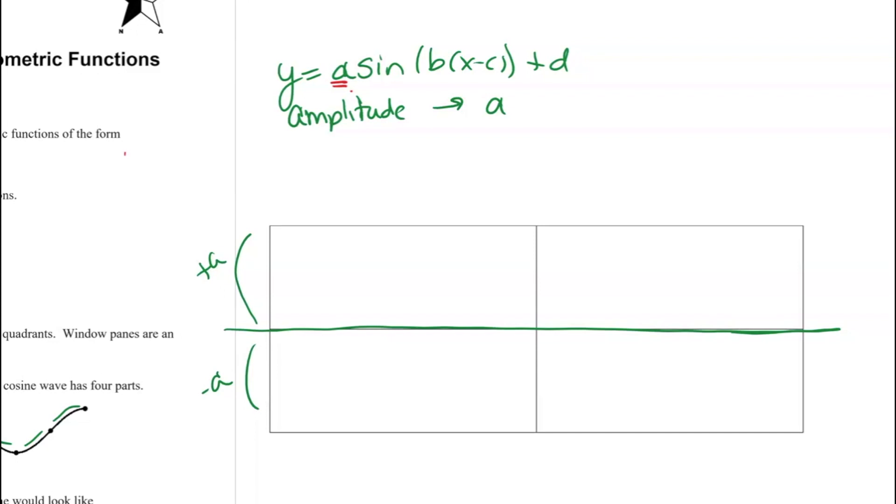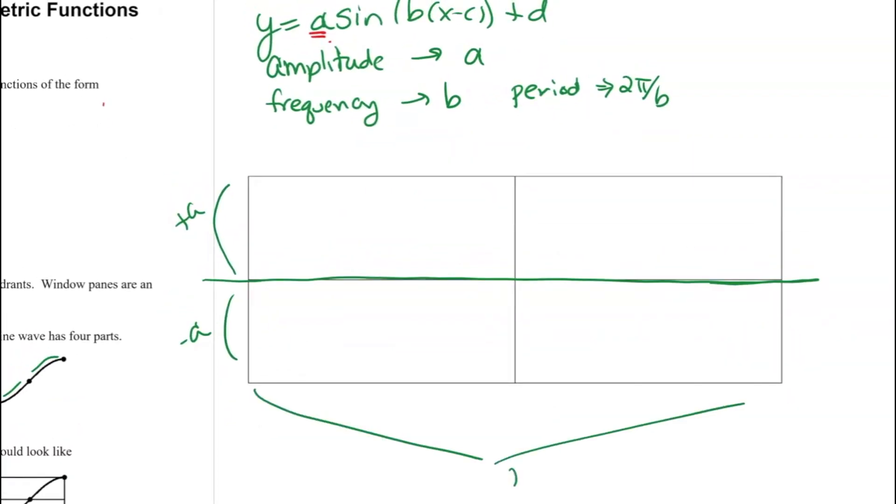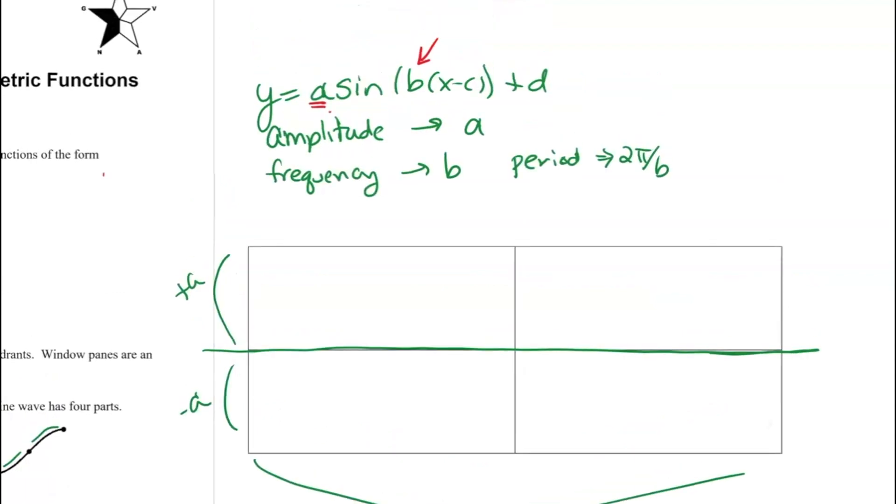We know that this b is our frequency, and we can get our period by taking 2π and dividing it by the frequency. So that means that on my windowpane, the width of this windowpane is that 2π divided by b.